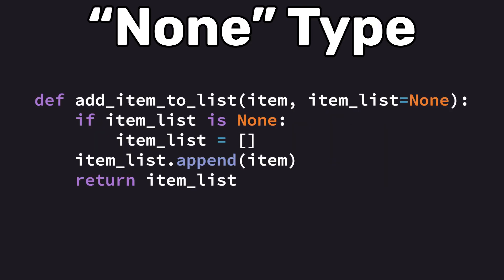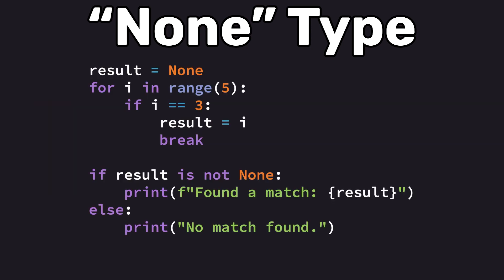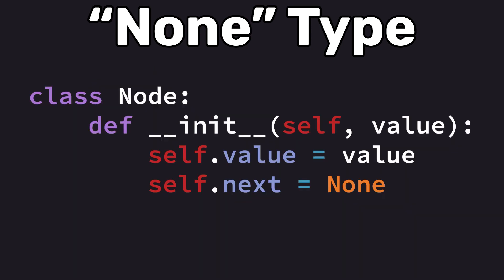The None data type represents the absence of a value or a null value, which you might use for default function arguments, initializing variables that will be assigned later, or indicating the end of lists and data structures.